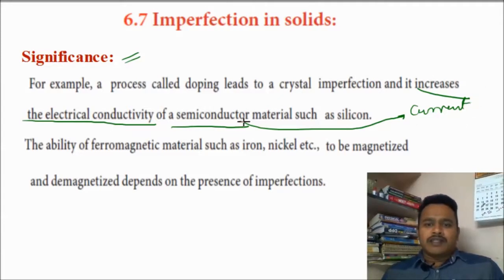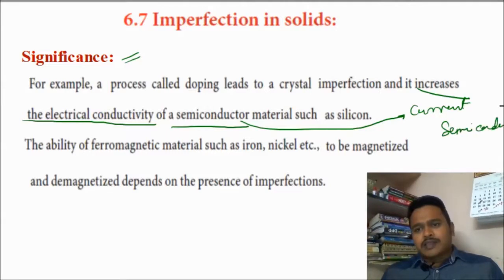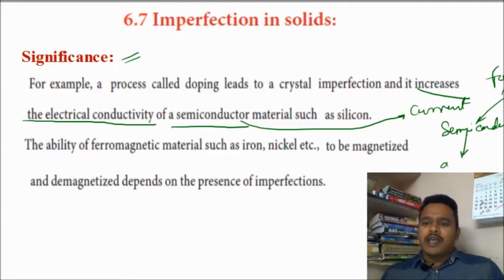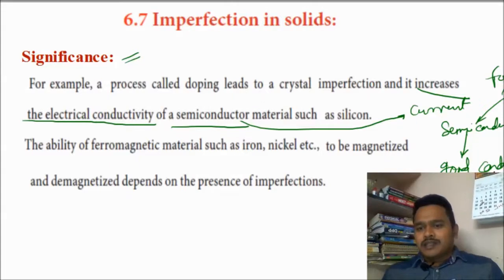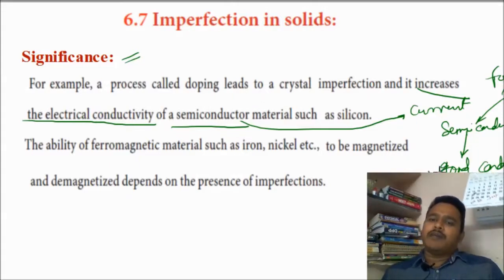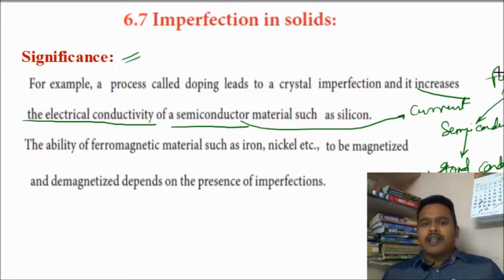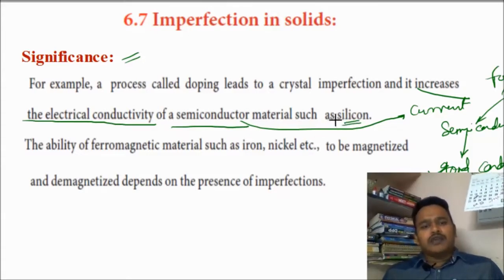For that semiconductor, you are adding some foreign species — that is what doping. You are going to admit some other species, and after this it is acting like a better conductor than before. This conduction property is developed by adding some foreign species. Due to adding this foreign species, there is an irregular arrangement in the crystal of silicon, so it is acting like a good conductor. This is the use, this is the significance.